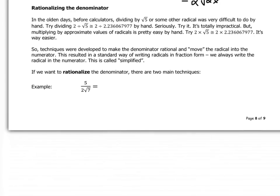Next, rationalizing the denominator. Way back in the olden days, before calculators, dividing by square root of 5 or some other radical was very difficult to do by hand. Try it. Take 2 divided by the square root of 5, that's 2 divided by 2.236067977, and do it by hand. Seriously, try it. It's completely, totally impractical. It's just, it's going to take you a half an hour, and most people, myself included, would make an error somewhere. So it's much easier to multiply by approximate values of radicals. That's still easy to do by hand. So try 2 times the square root of 5, and you'll see, that's just actually pretty straightforward.